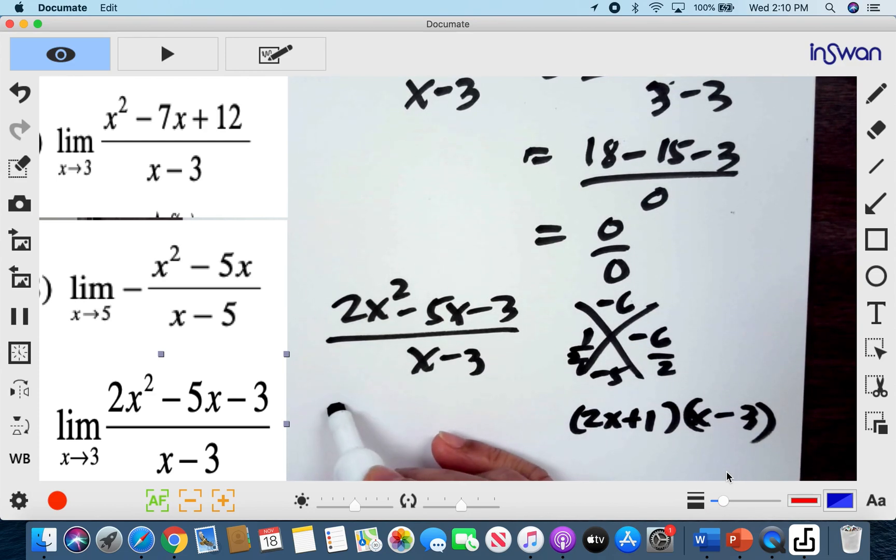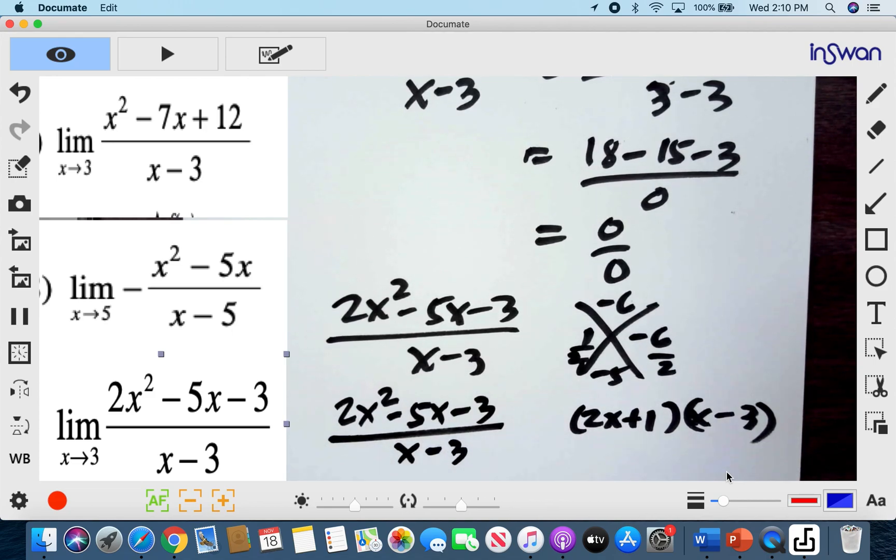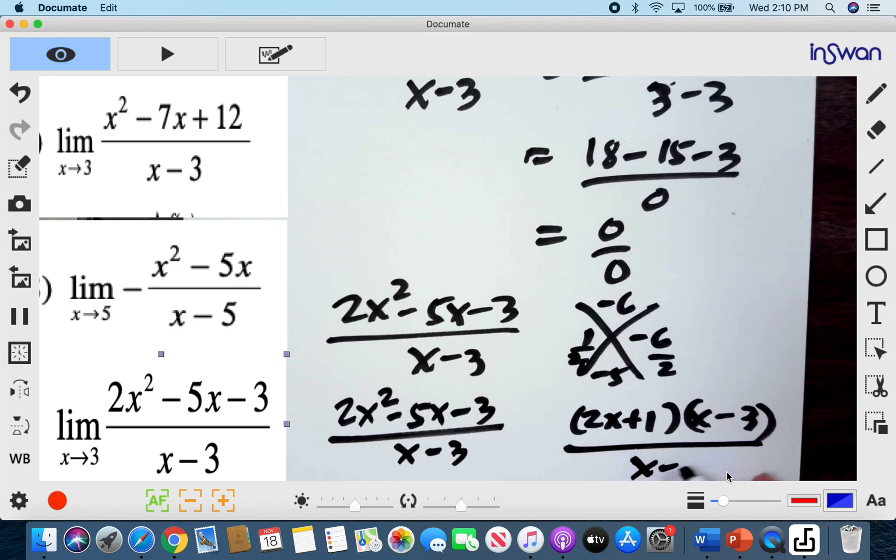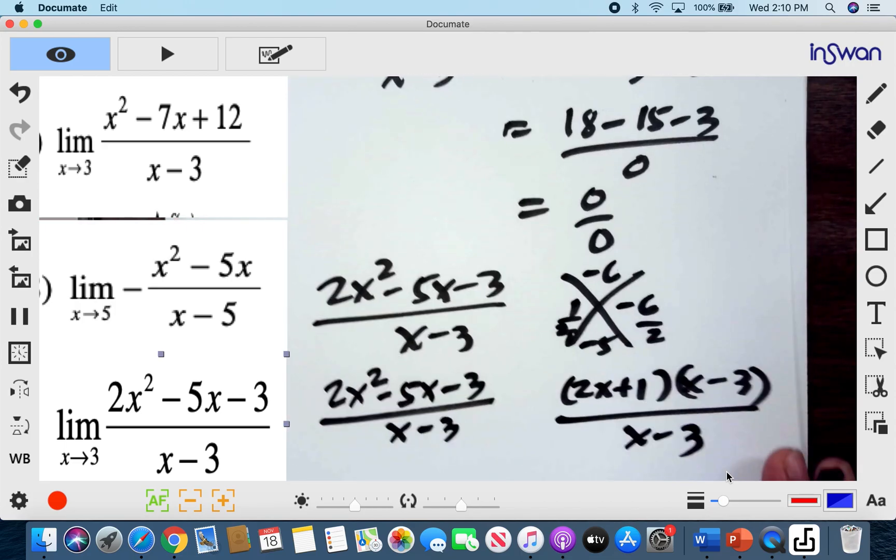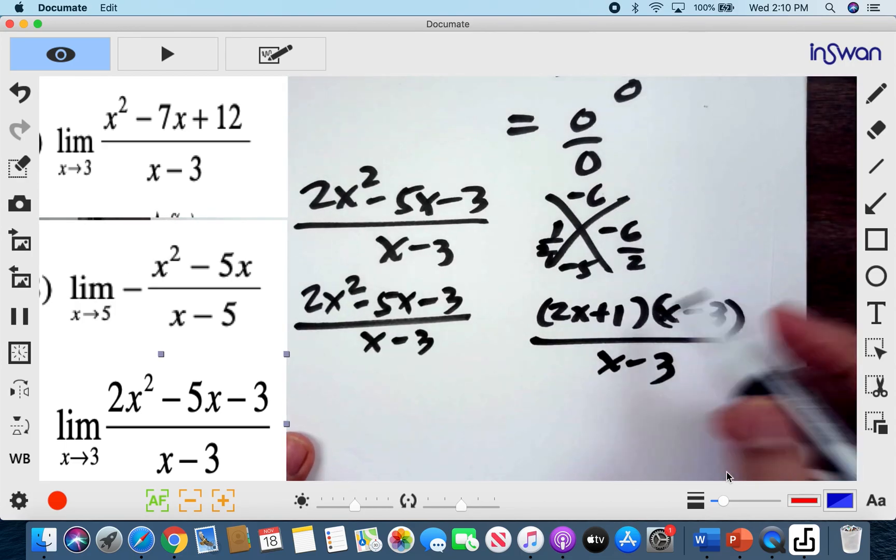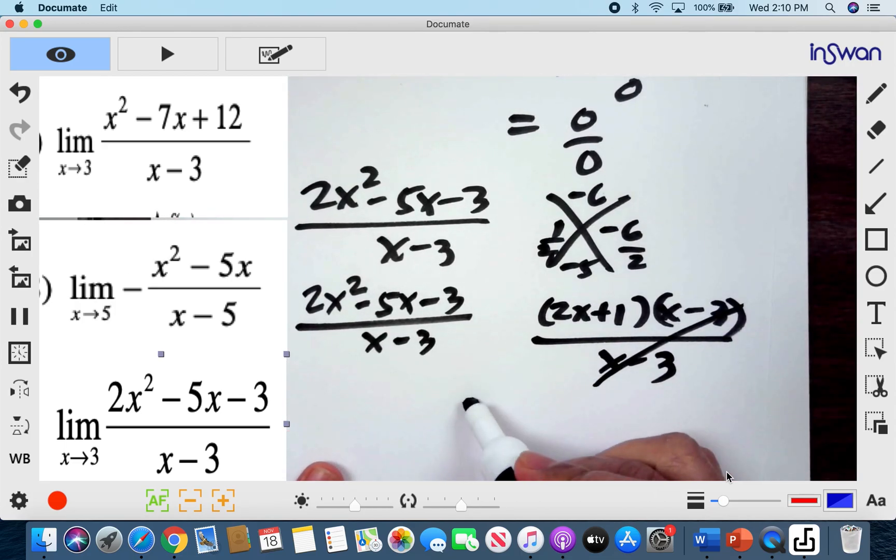Actually when you factor out the expression, all you need to do is to find the second factor if you're trying to place mark. That's how it is. And then all over x minus 3. And so what we can do is to cancel out x minus 3. And what's left of our equation is 2x plus 1.